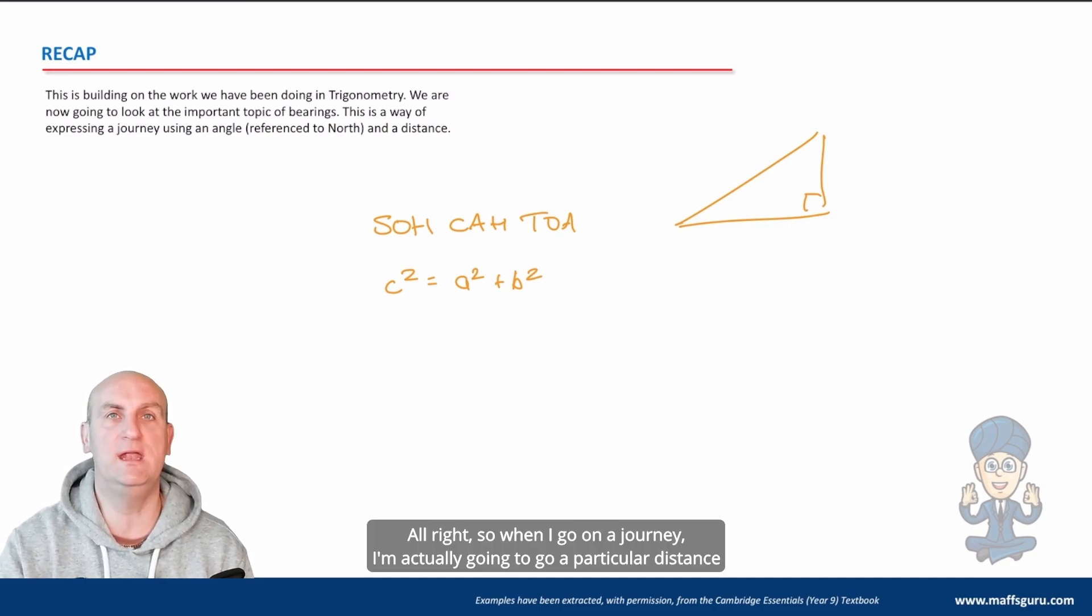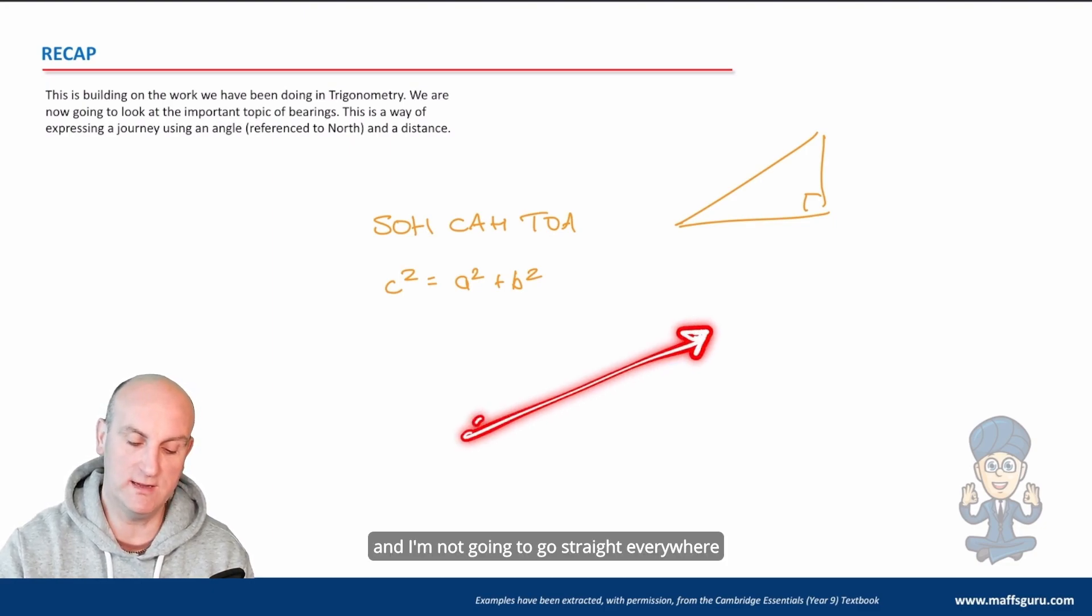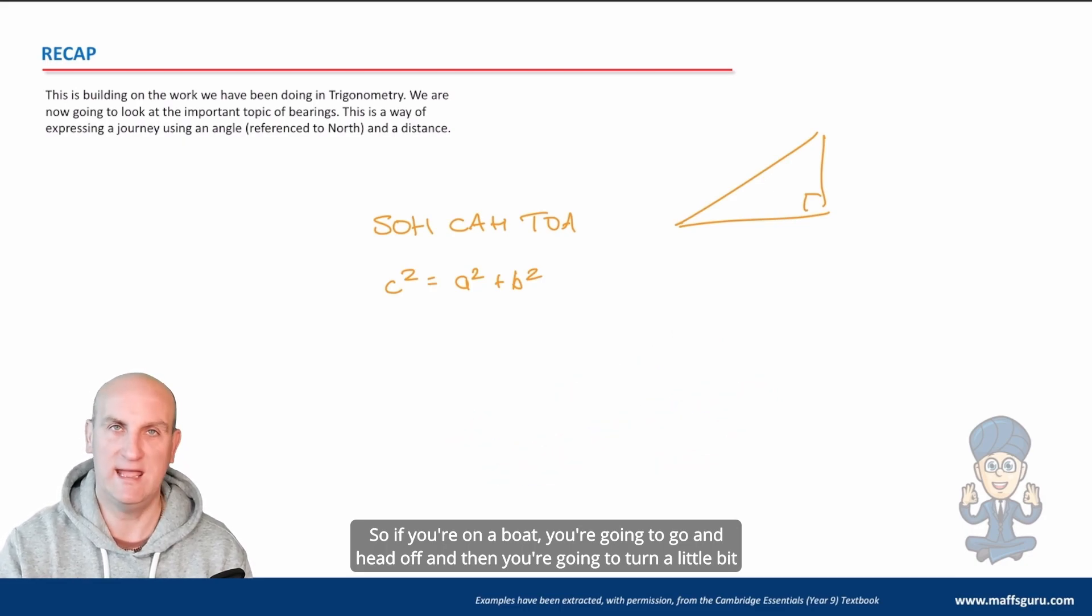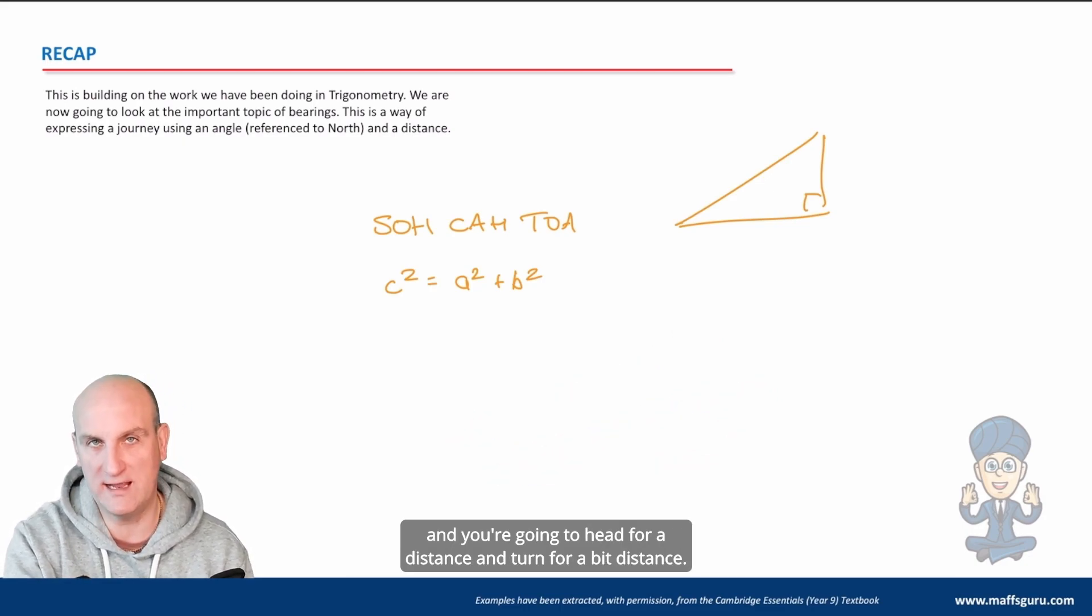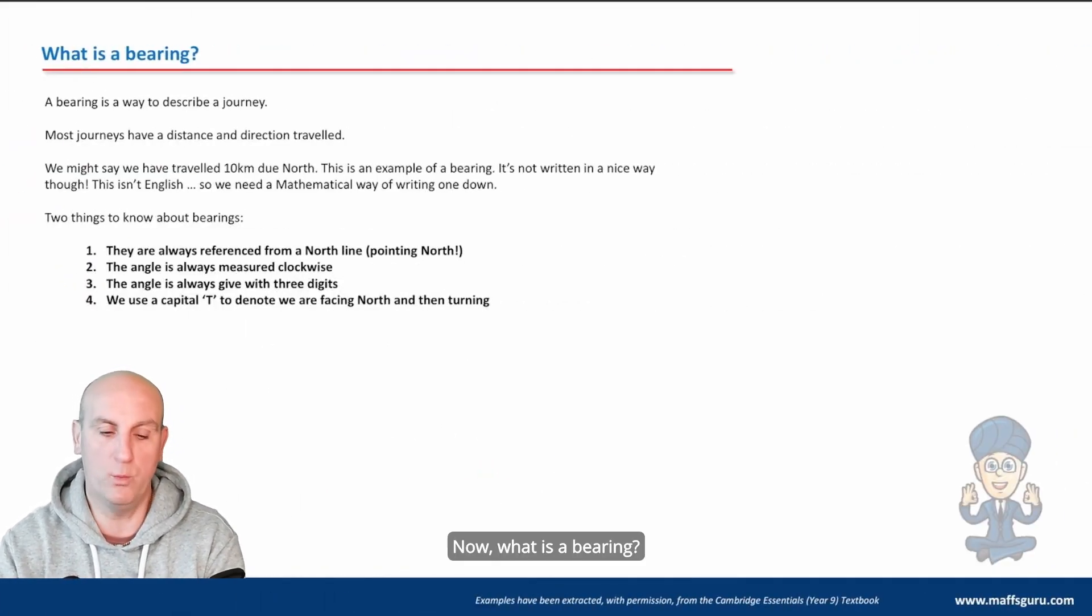But we also need to know how to use this in terms of something called a bearing. So when I go on a journey, I'm actually going to go a particular distance and I'm not going to go straight everywhere because I'm going to go through certain angles and stuff. So if you're on a boat, you're going to go and head off and then you're going to turn a little bit and you're going to head for a distance and turn for a bit distance. And that's really what a bearing is.